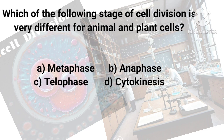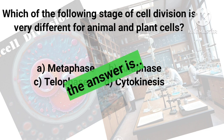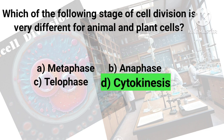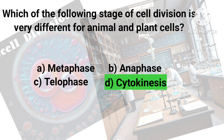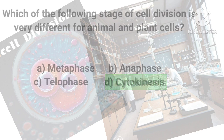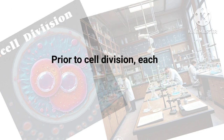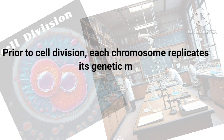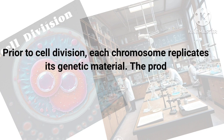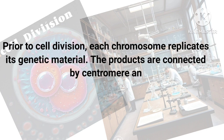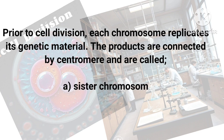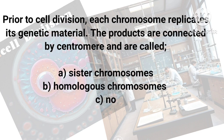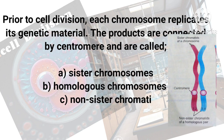The answer is the division of the cytoplasm, that is cytokinesis. Let's try another one: prior to cell division, each chromosome replicates its genetic material. The products are connected by a centromere and are called — as you can see in the diagram — what are these?